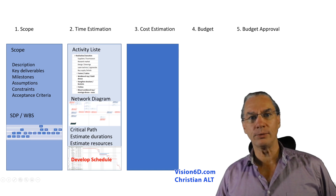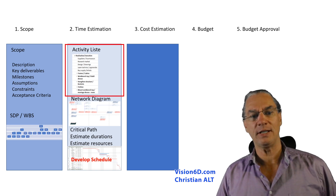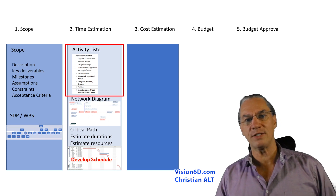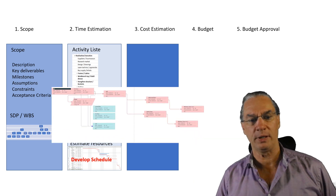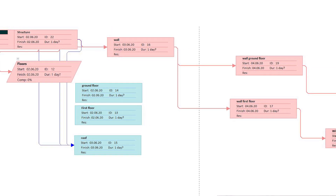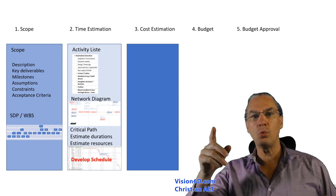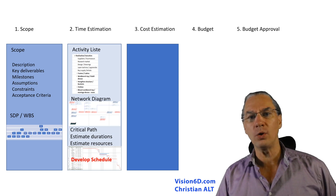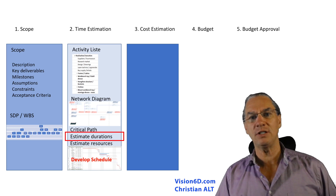With the work breakdown structure, it will help us do the activity list for time estimation. With the activity list, we then have to define which activity comes first, which one is next, and for this we will use a network diagram. The network diagram has as a key characteristic the critical path. The critical path defines when we will start the project and when we will end it. For that, we also have to do duration estimates of each activity.